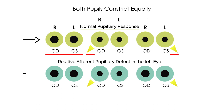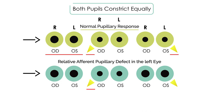Now we have the second row. This is a patient where you have a defect, and in particular a defect in the left eye. First you shine the light in the unaffected eye, which in this case is the right eye, and the response is normal — both pupils constrict equally.